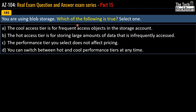Question 185 is about blob storage. Which of the following is true? Options: the cool access tier is for frequent access objects; the hot access tier is for storing large amounts of infrequently accessed data; the performance tier you select does not affect pricing; or you can switch between hot and cool performance tiers at any time. The correct answer is option D: you can switch between hot and cool performance tiers at any time.